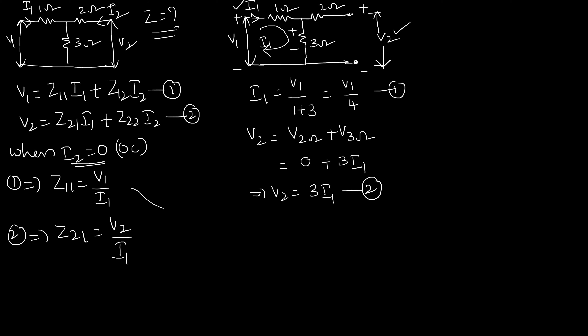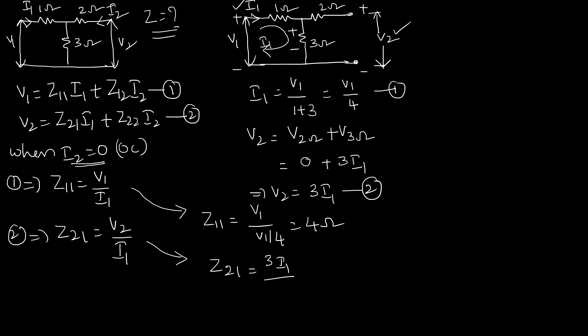Now we solve for the parameters. Z11 = V1/I1 = V1/(V1/4) = 4 ohms. For Z21 = V2/I1 = 3·I1/I1 = 3 ohms. So the first condition gives Z11 = 4 Ω and Z21 = 3 Ω.